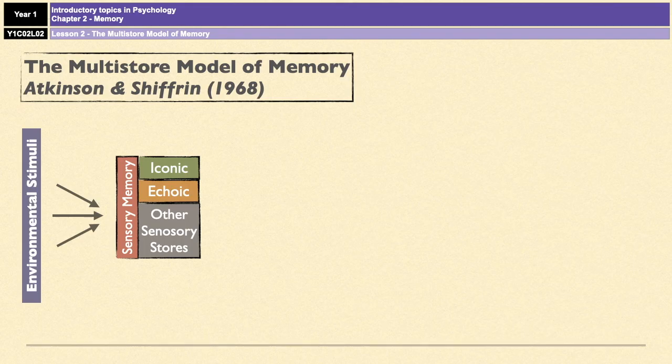The capacity of sensory memory is very, very large, because you're always taking in information via your senses, so there's a lot of space to hold a lot of things in sensory memory. However, the duration of sensory memory is very, very short. Given how much stuff comes in through our five senses, we actually remember very, very little of all of those things, so duration is very short.